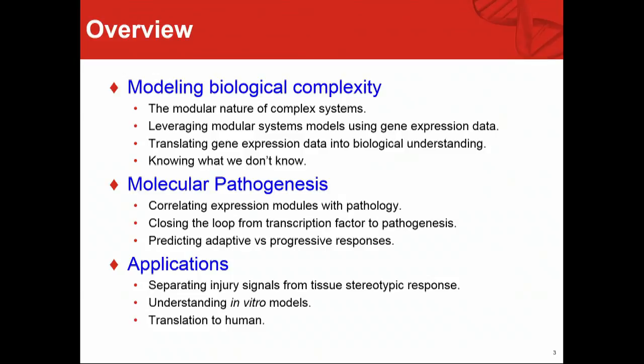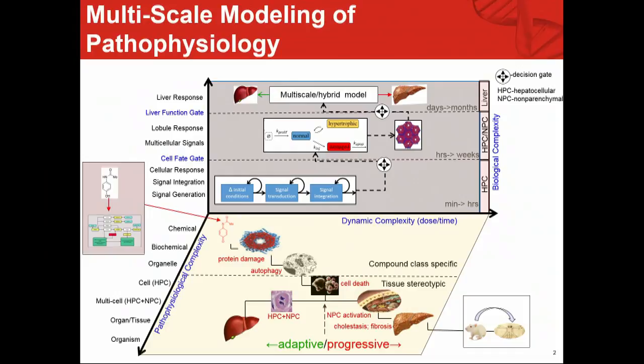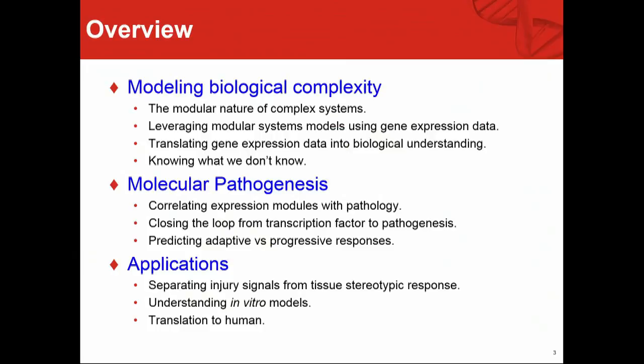It's reasonable to propose that early on some of these responses will be compound-specific and will depend on the mechanism by which the compound kills the cell. But once a hepatocyte is dead, is it actually sending compound-specific signals to the liver, or is the liver simply responding to a loss of function? What I call these are tissue stereotypic responses — the response of the liver to loss of function regardless of how that occurred — versus compound-specific problems which may have mechanistic information.